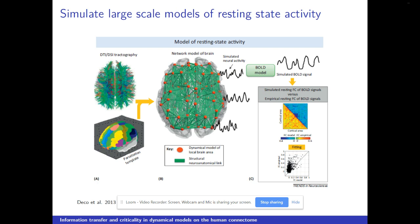Especially in the last years, it has been increasingly easy to measure non-invasively the structural architecture at large scale of the human brain. And in the same way, it is also relatively easy to measure the activity of different brain areas. The idea is that if we know the structural architecture and we simulate dynamical models living in each brain area, we can build a model of large-scale multivariate activity and compare this with the empirical dynamics we observe — and possibly learn something more about the relationship between structure and function in the brain.